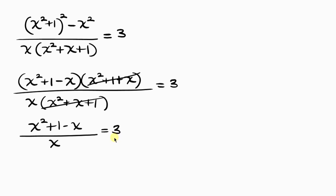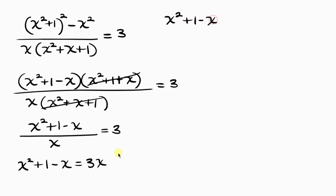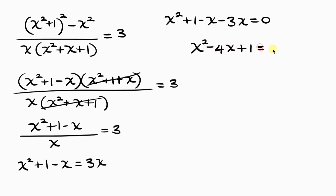Our next step is to cross-multiply. When I cross-multiply, I get x squared plus 1 minus x equals 3x. Moving 3x to the left-hand side: x squared plus 1 minus x minus 3x equals 0. Combining like terms, minus x minus 3x gives minus 4x, so this becomes x squared minus 4x plus 1 equals 0.